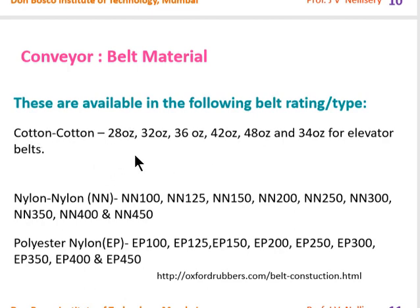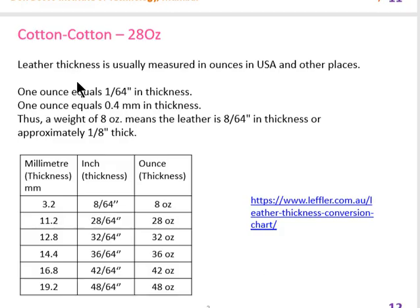Conveyor belts come in different types. Cotton Cotton can have 28 oz, 32 oz, or 34 oz fabric. Nylon Nylon (NN) fabric is available as NN 100, NN 125, NN 450, and so on. Polyester Nylon (EP) fabric comes as EP 100, EP 200, and more. These varieties are available in the market and are made by different manufacturers.